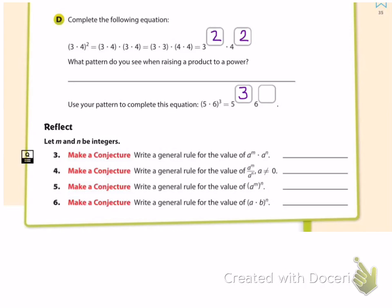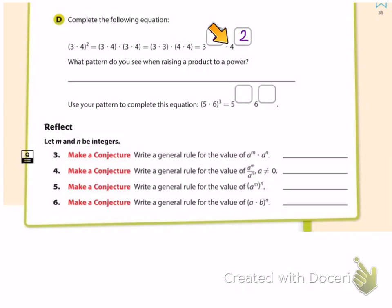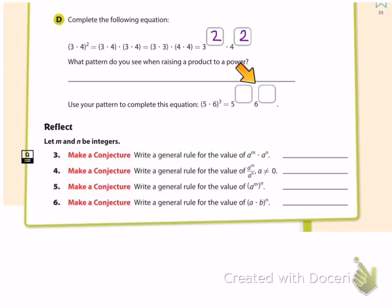How could you describe that pattern? When we have a product raised to a power, it can be thought of as each of the factors raised to the same power and multiplied together. The power of a product is the product of the powers. We can raise those factors to a power individually. The answer is in the teacher guide — you can read theirs if you'd like.